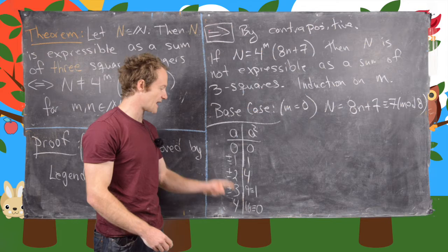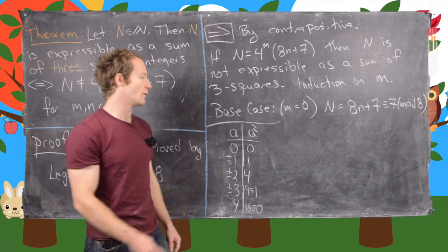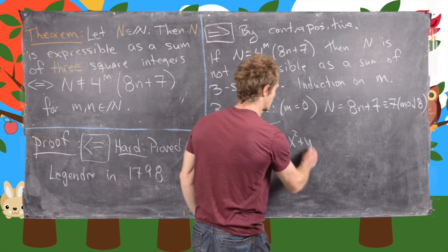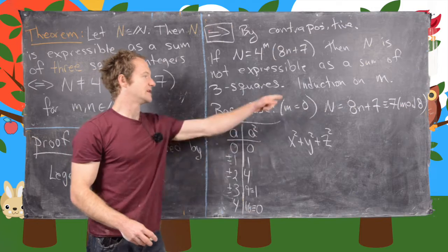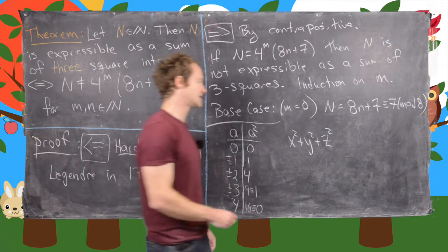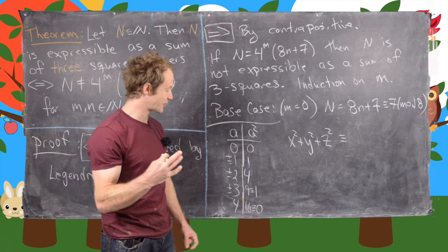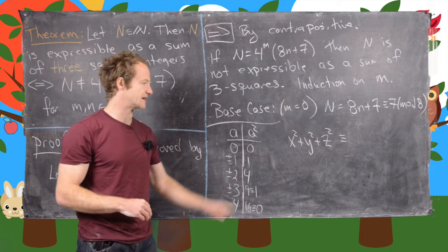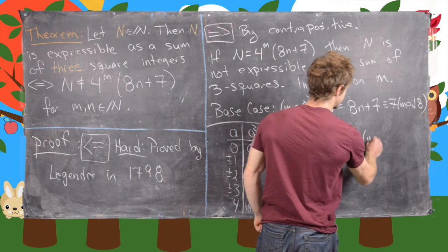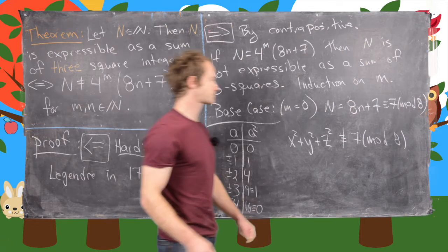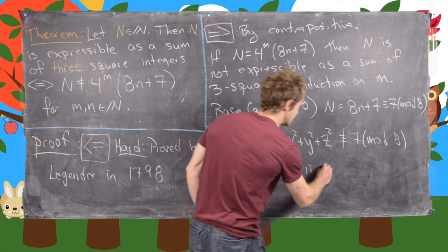The only perfect squares mod 8 are the numbers 0, 1, and 4. But we need x² + y² + z² to be congruent to 7 mod 8. That's impossible if we're only allowed to use exactly 3 numbers from this list — it's impossible to get to 7 mod 8. So that means this is never congruent to 7 mod 8, meaning n is not expressible as a sum of 3 squares.